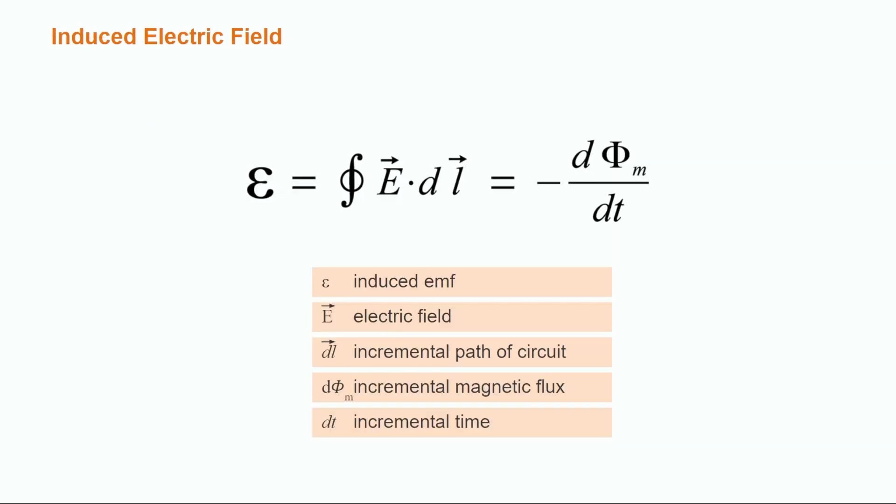The EMF also induces an electric field in the wires, and it's this field that does the work to move the charges through the circuit. Mathematically, this can be represented by the line integral around the circuit of E·dL. This can also be expressed as the opposite of the rate of change of the magnetic flux over time.